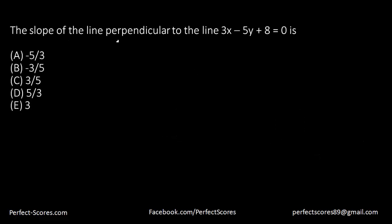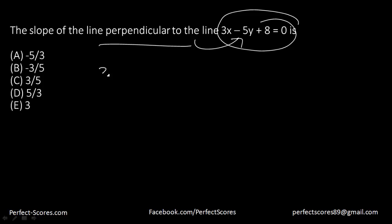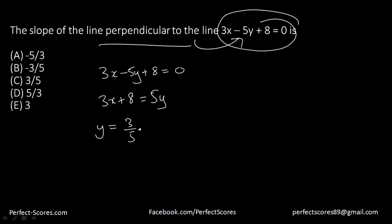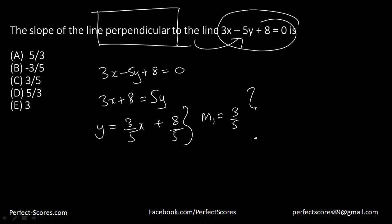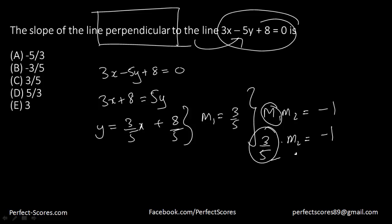The next question asks for the slope of the line perpendicular to the given line. First find the slope of the given line: 3x plus 8 equals 5y gives y equals (3/5)x plus 8/5, so the slope is 3/5. When lines are perpendicular, the product of their slopes equals negative 1. So the slope of the perpendicular line is negative 5 over 3.